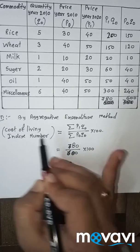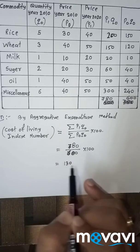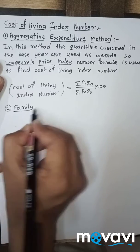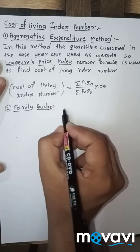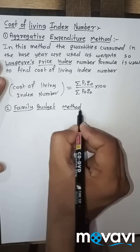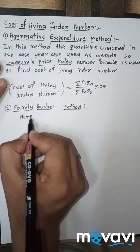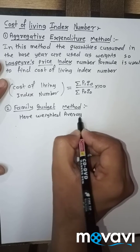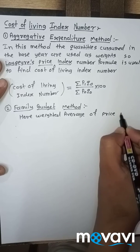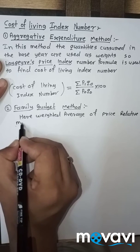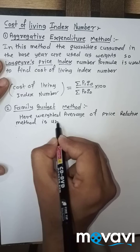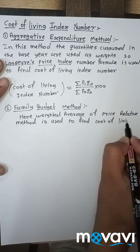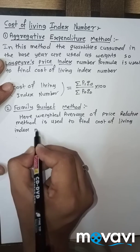We get the final answer 130. Therefore, by aggregative expenditure method, cost of living index number is 130. The next method is the family budget method. In the family budget method, the weighted average of price relative method is used to find the cost of living index number.